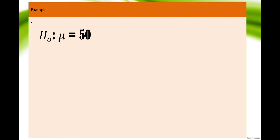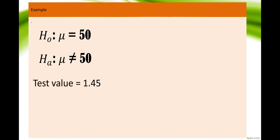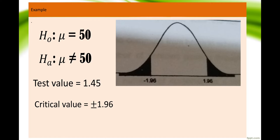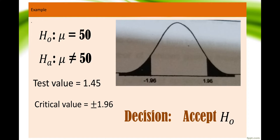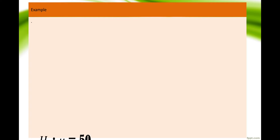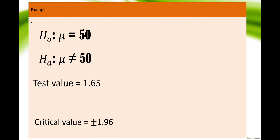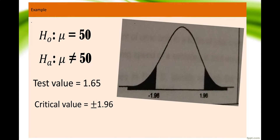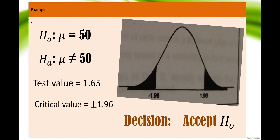Example 1: If H₀: μ = 50, Hₐ: μ ≠ 50 (two-tailed), and the test value is 1.45 while the critical value is ±1.96 — since 1.45 is less than 1.96, the decision is to accept the null hypothesis. Example 2: The test value is 1.65 and the critical value is ±1.96 (two-tailed). Since 1.65 is still less than 1.96, the decision is again to accept the null hypothesis.